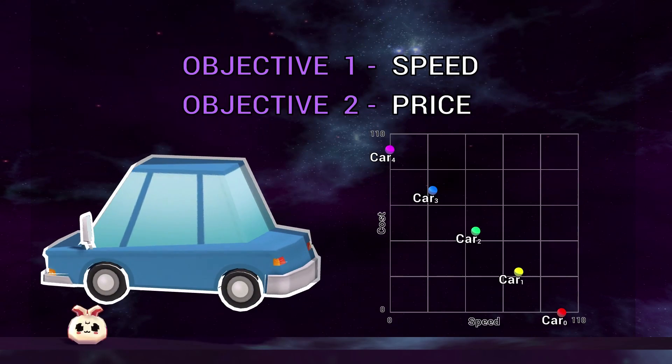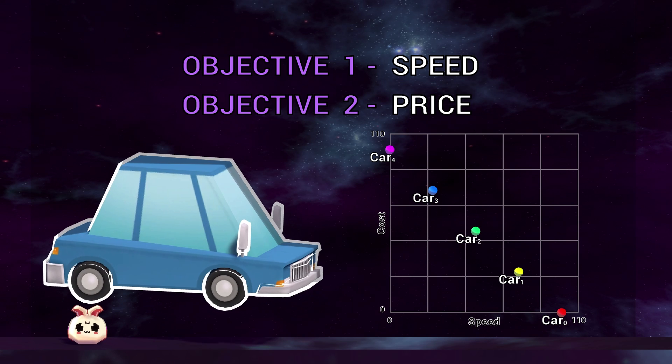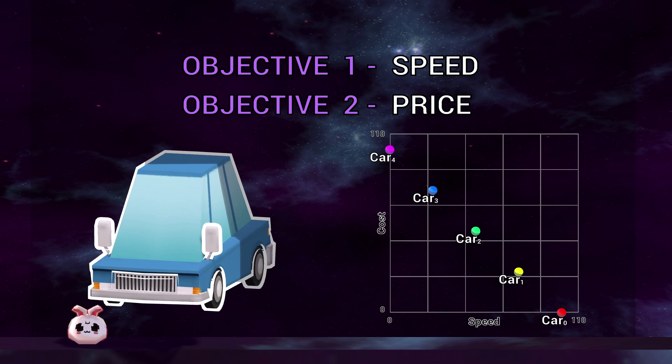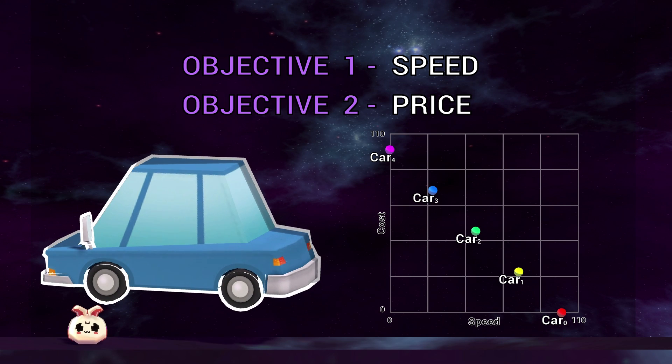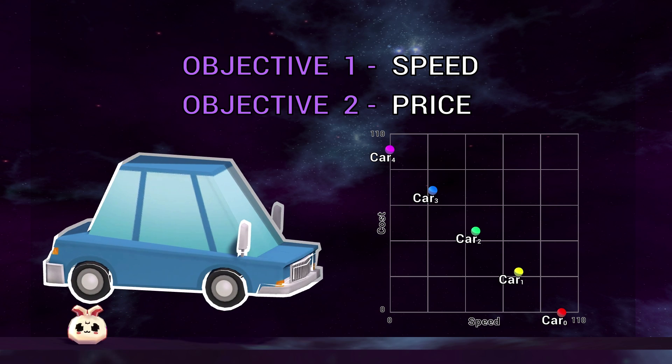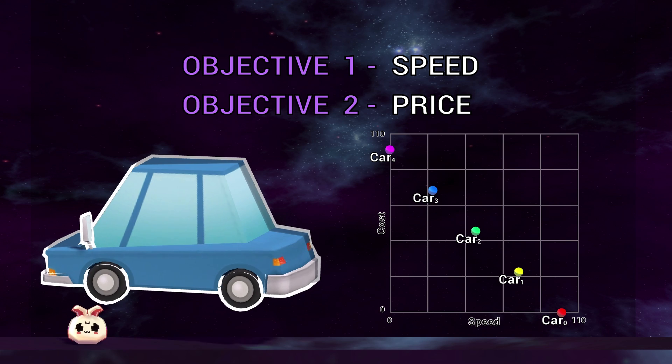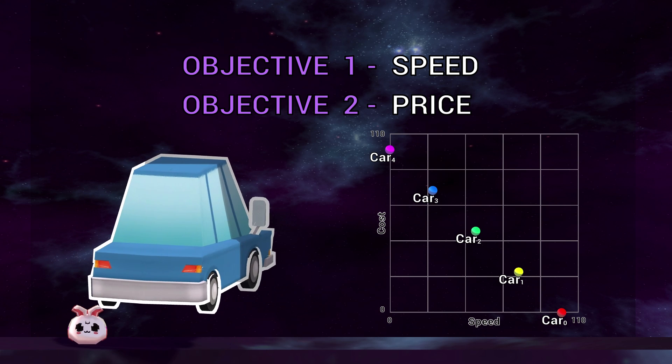So instead, we need to treat this as a multi-objective problem. Let's say we try to solve the problem again, but this time we account for speed and price. This makes it a multi-objective problem with two objectives. We could include more, but visualizing two objectives is easy.